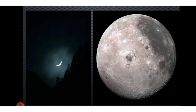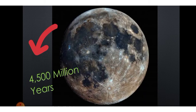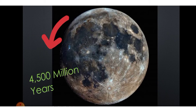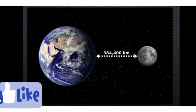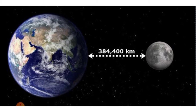The moon is the only natural satellite of the earth. Its surface looks gray with mountains and plains covered with rock dust. The age of the moon is about 4,500 million years, same as that of the earth. The moon is a big ball of gray rock, about one fourth the size of the earth. The distance between the moon and the earth is approximately 384,000 km.